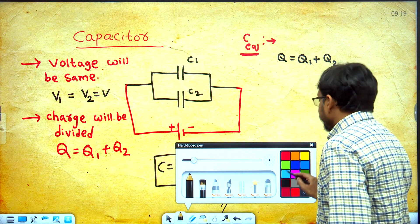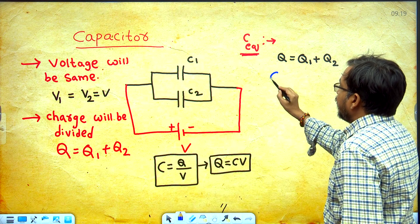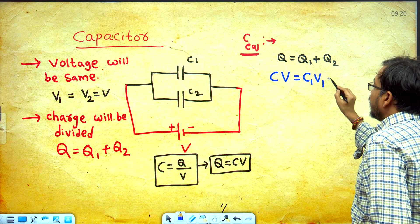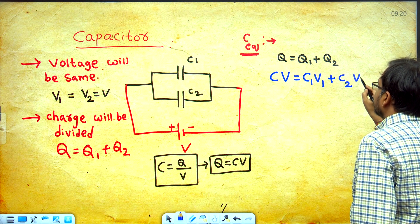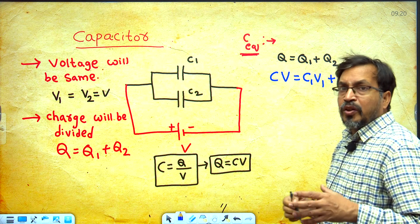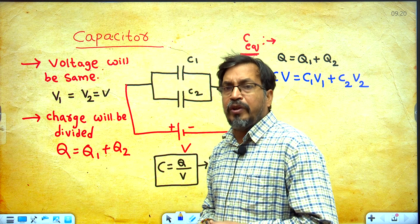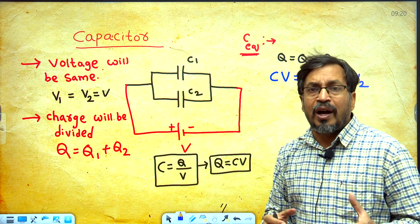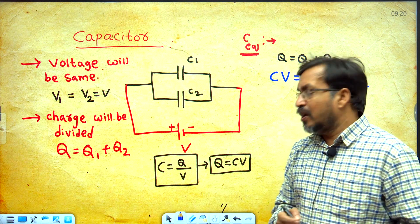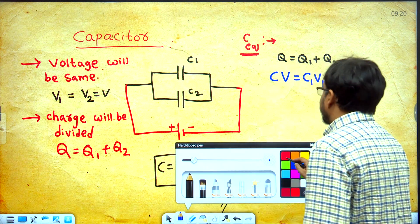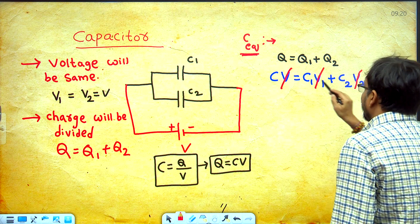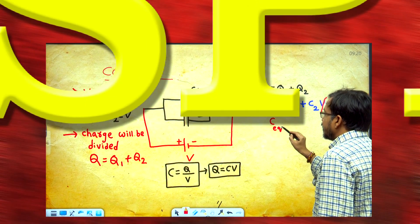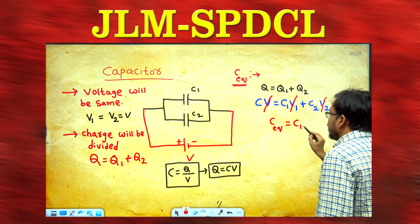Now I am substituting this relation. So q equal to CV. Q1 equal to C1 into V1, plus Q2 equal to C2 into V2. Just now I explained voltage will be same, so V1 equal to V2 equal to V. I am canceling both sides voltage V, because V equal to V1 equal to V2. Then C equivalent equal to C1 plus C2.